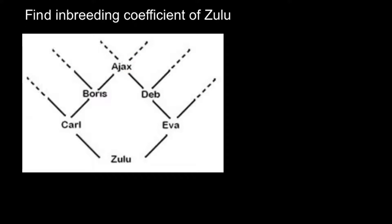So we see here — I'm not sure of the correct pronunciation — Ajax. Ajax has two parents, and of course these parents have to be of different sex: male and female. Ajax here, let it also be male. This person has two children from different marriages, because as you see he contributes half of his genome here and half of his genome here, but the other person here and here would be different — so this means two different marriages.